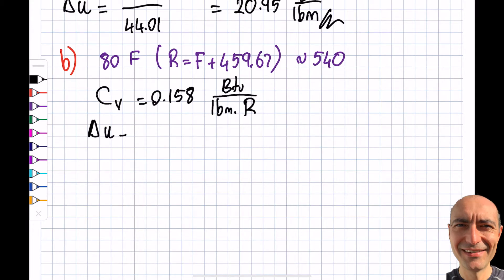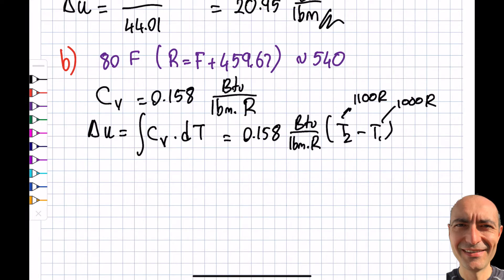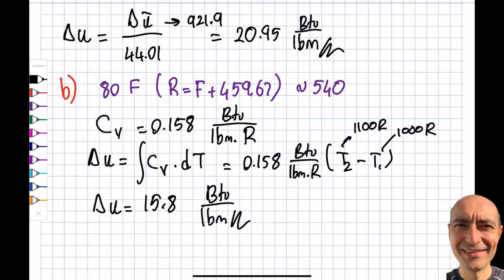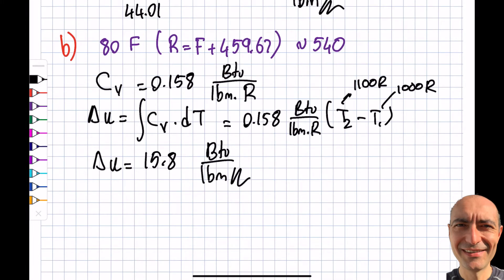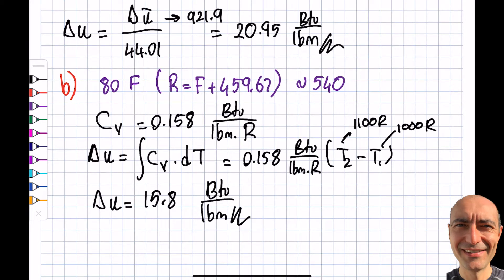From the previous segment, delta u equals cv times dt. Obviously cv is constant, so I can take it out of the integral. I get 0.158 BTU per pound mass times Rankine times dt. Integral of dt is delta T, T2 minus T1. This is 1100 Rankine, this is 1000 Rankine, so it's 100. You get 15.8 BTU per pound mass. You can see this is not a good assumption at all. The error will be right around 25%, so it's 24.6% error. This is kind of unacceptable.